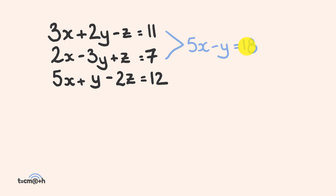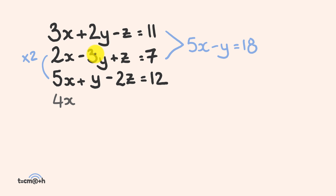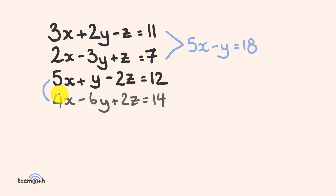The next thing we're going to do is combine two other equations, but it has to include the third equation for this to work. So we're going to combine equation two and equation three. The z variable here is positive z and negative 2z, so we're going to multiply equation two by two. That gives us 4x minus 6y plus 2z, which equals 14.